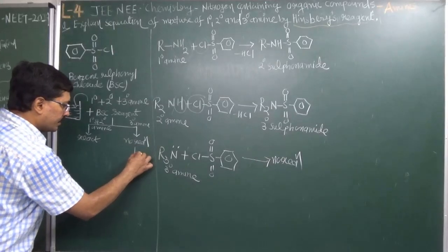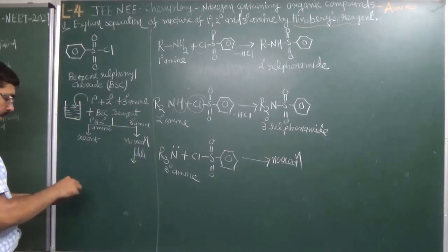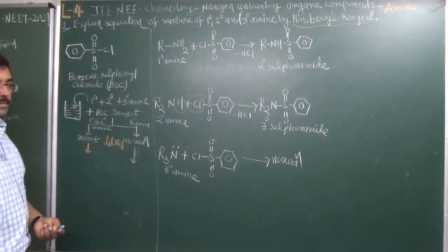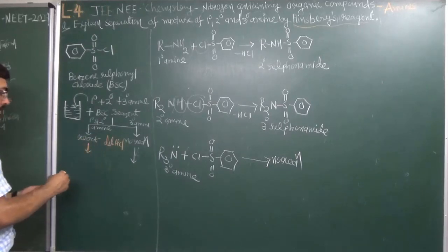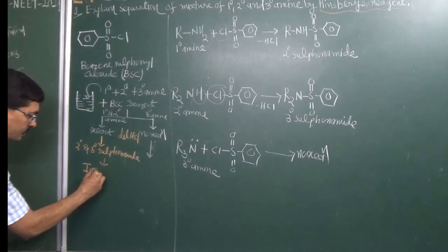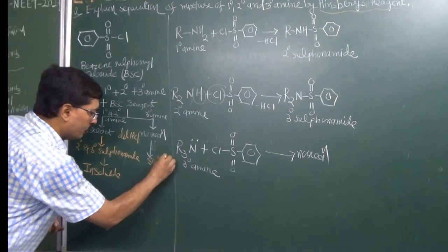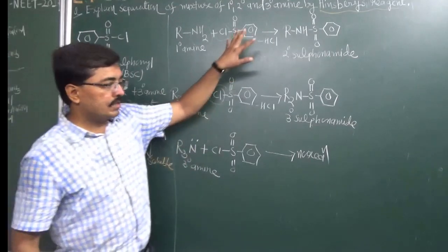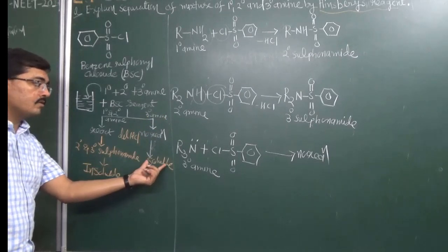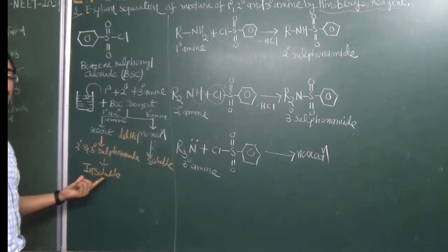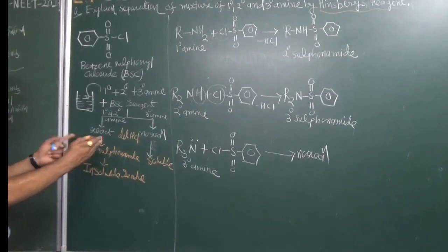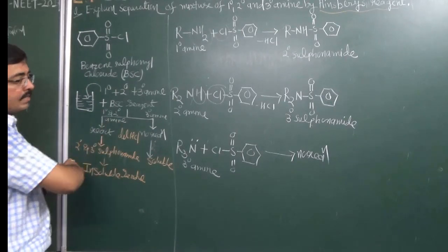Now, to this mixture we add dilute HCl. When dilute HCl is added, it is observed that the secondary and tertiary sulfonyl amides remain insoluble, while the Tertiary Amine becomes soluble. The insoluble solid mass is considered a residue and can be separated by filtration. Through filtration, we can separate the mixture of primary and secondary sulfonyl amides from the tertiary amine.